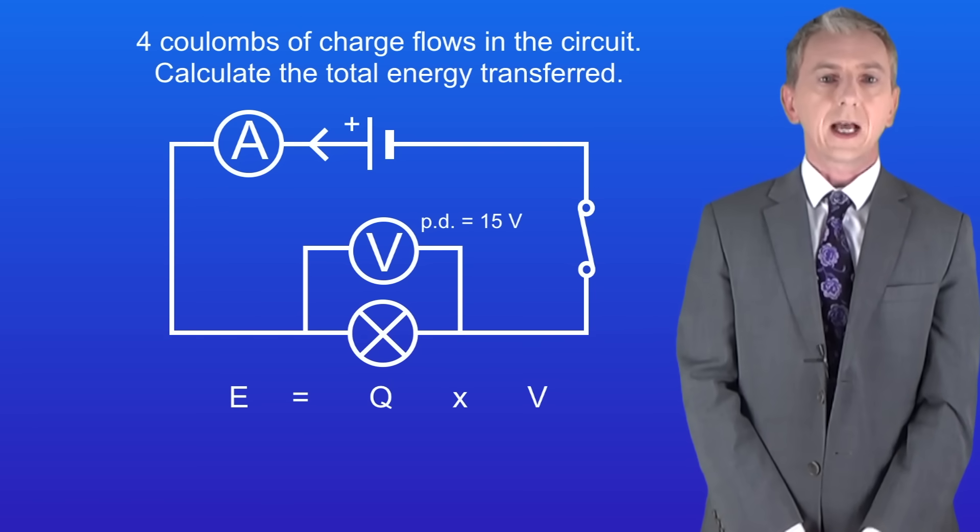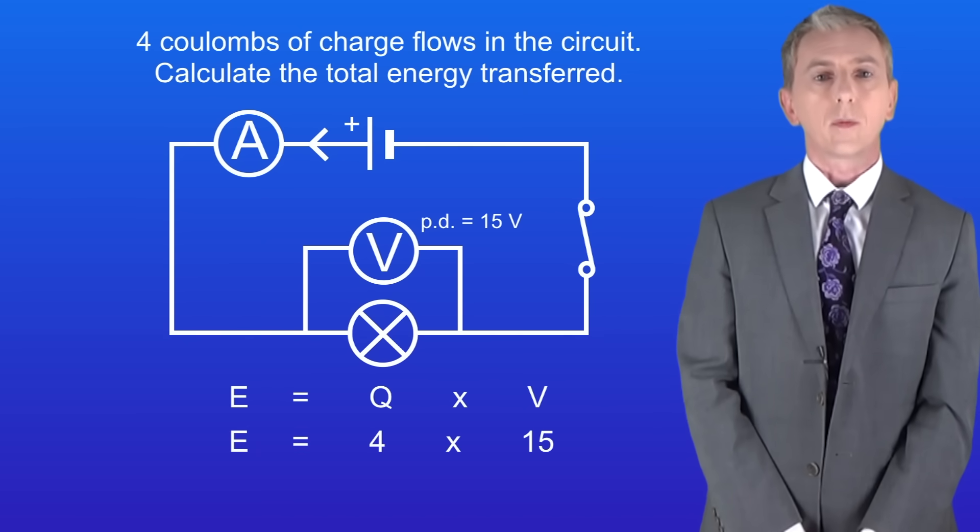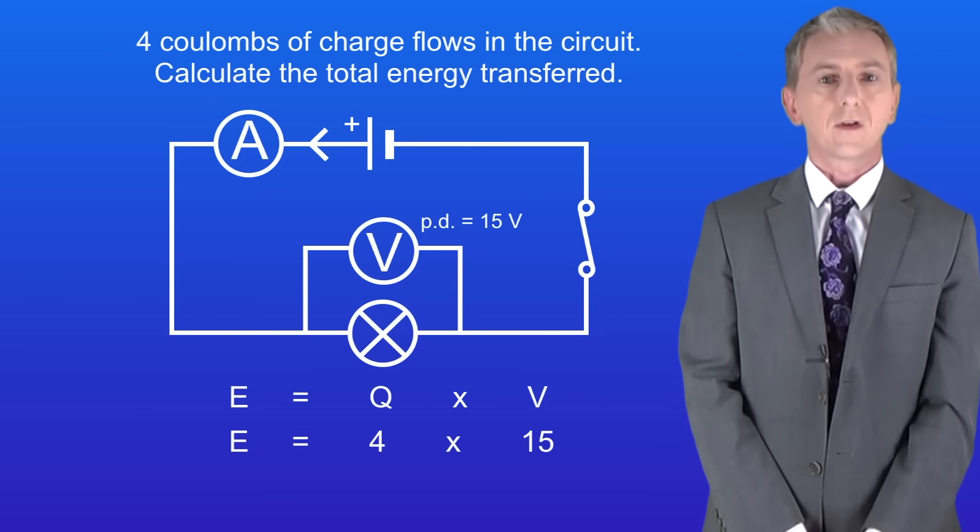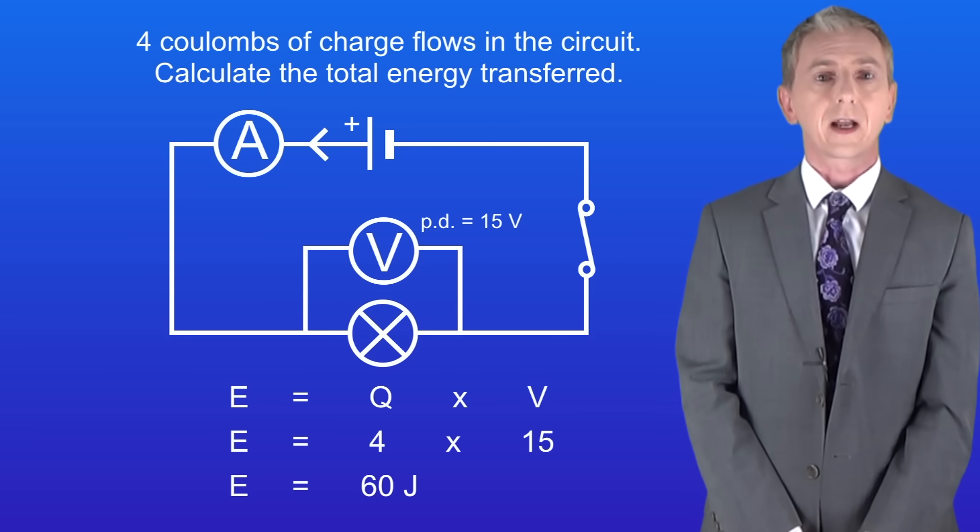Okay so to calculate the energy transferred we multiply the charge flow by the potential difference. The charge flow is four coulombs and the potential difference is 15 volts. Putting these numbers into the equation gives us an energy transfer of 60 joules and that's our final answer.